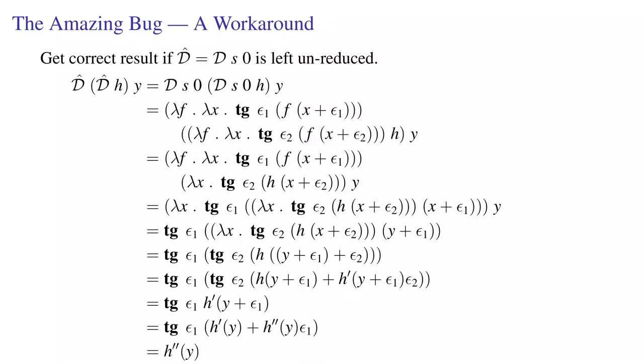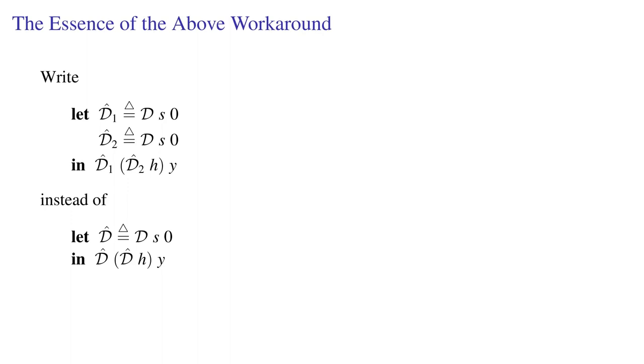Here's an idea for a workaround. We would have gotten the correct result if d hat had been left unreduced. So, instead of writing that expression at the bottom where we used d hat twice, we could define d hat twice and use the two different definitions. That would be okay, except it's manual and horrible.